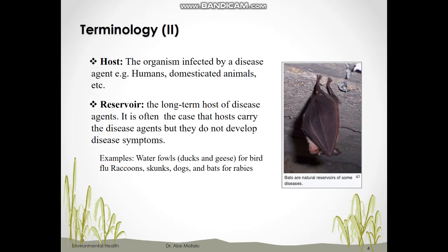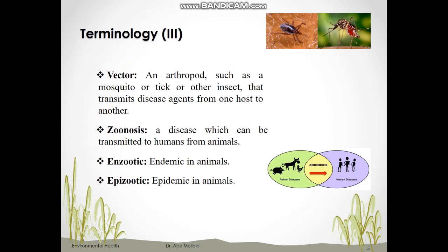Reservoir animals carry pathogens but do not show any symptoms themselves. Another important concept is vector. A vector is an arthropod — like a mosquito, tick, or other insect — that transmits a disease agent or pathogen from one host to another, usually by biting. Vector-borne disease refers to arthropod-borne diseases such as leishmaniasis, tick-borne diseases like Lyme disease, or mosquito-borne diseases like West Nile virus and malaria. Zoonosis or zoonotic diseases are diseases that can be transmitted from animals to humans.